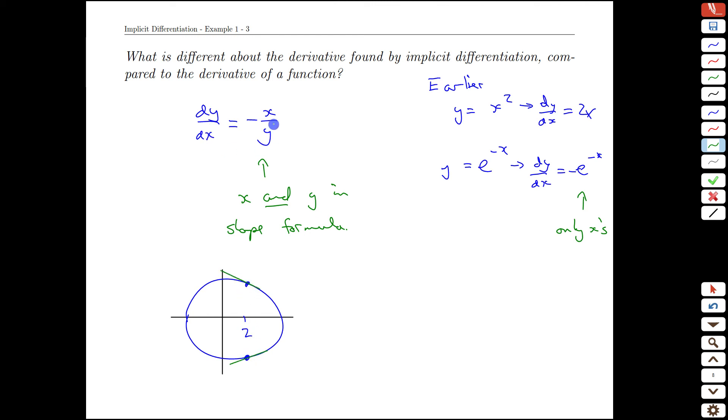So we'd have to be able to distinguish the slope at this point from the slope at this point here, and that we can do by knowing both the x and the y value of the point on our circle for this example.